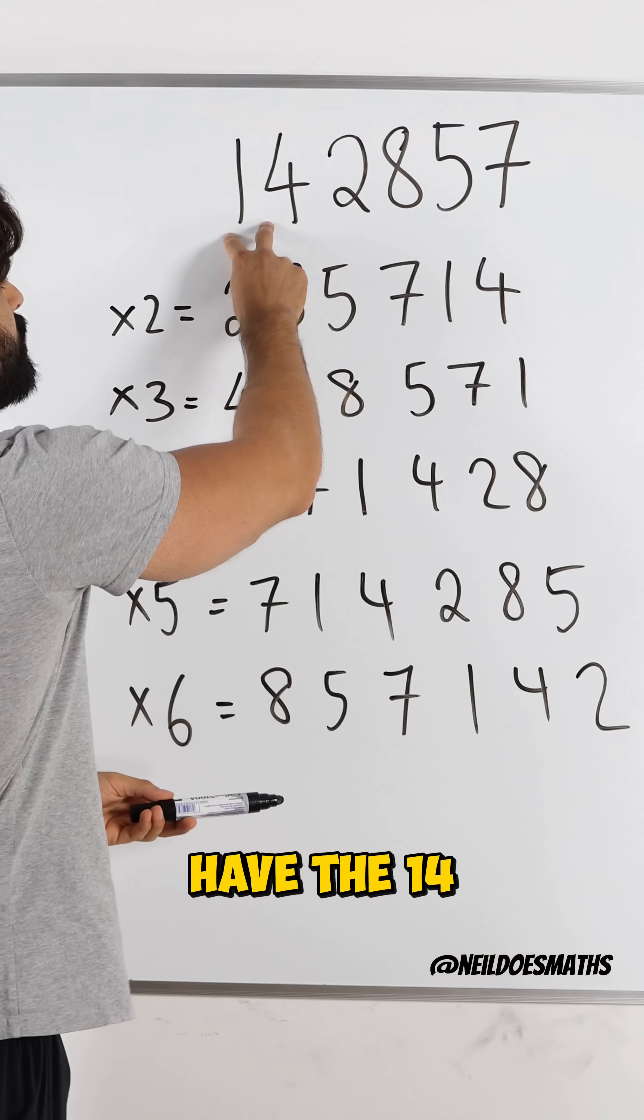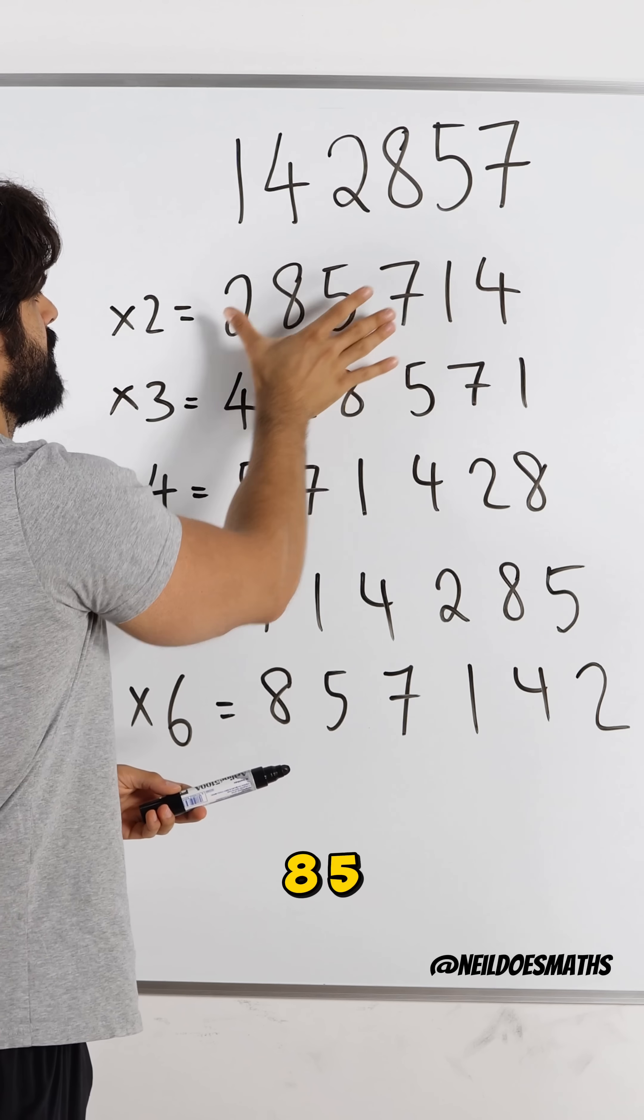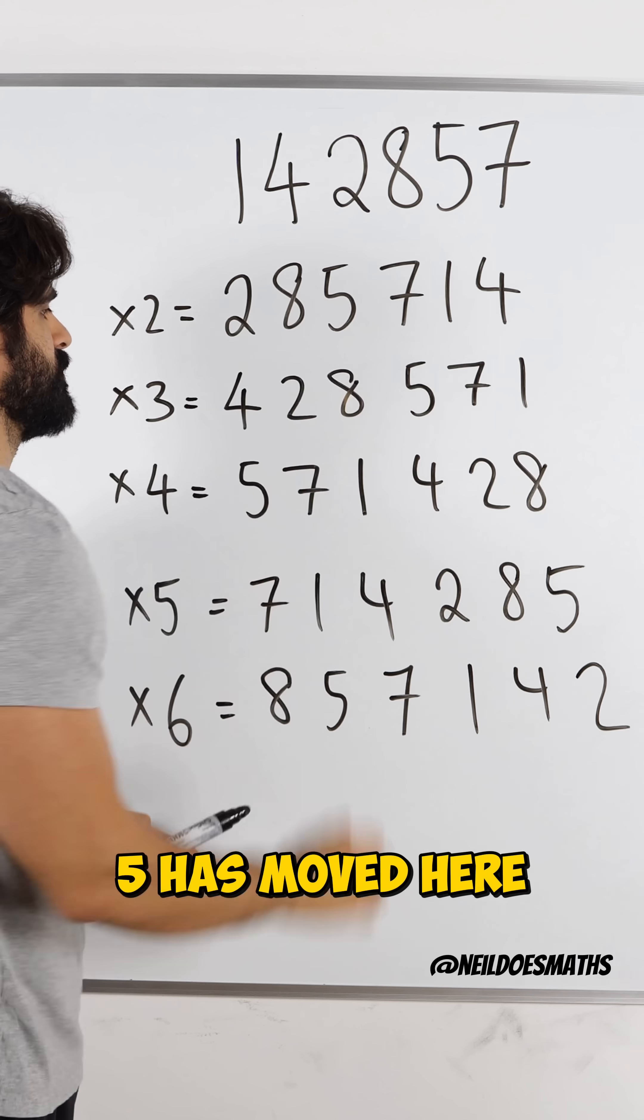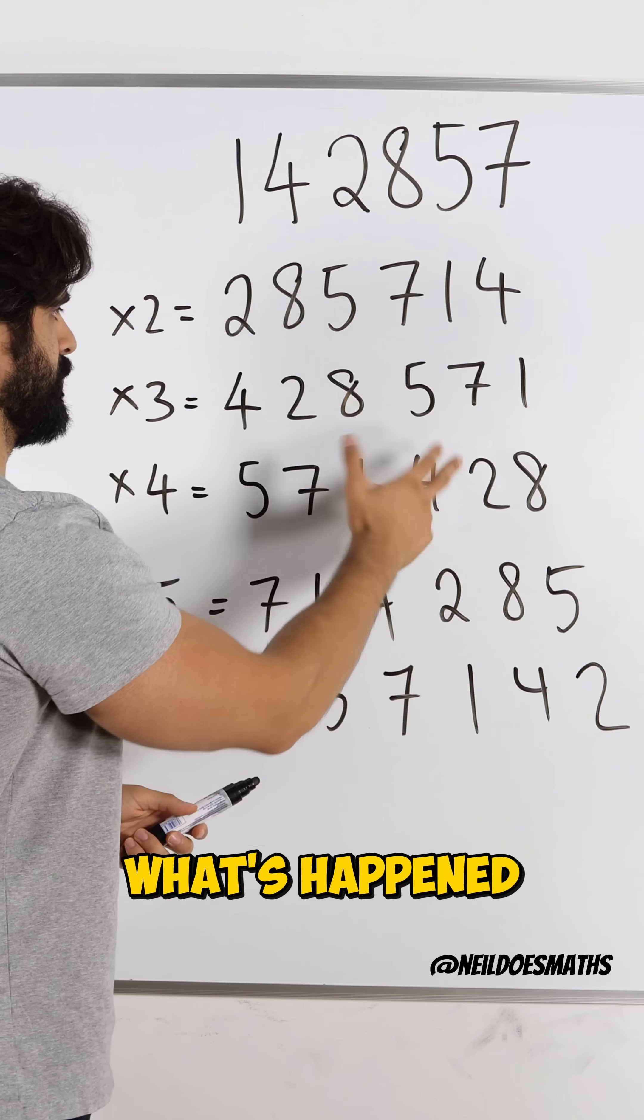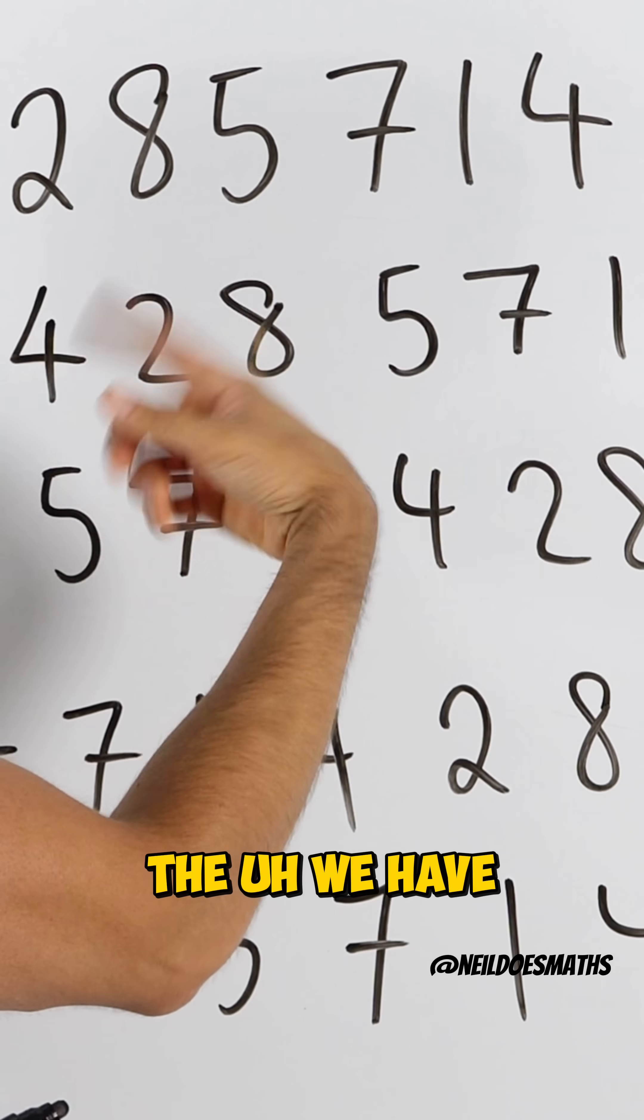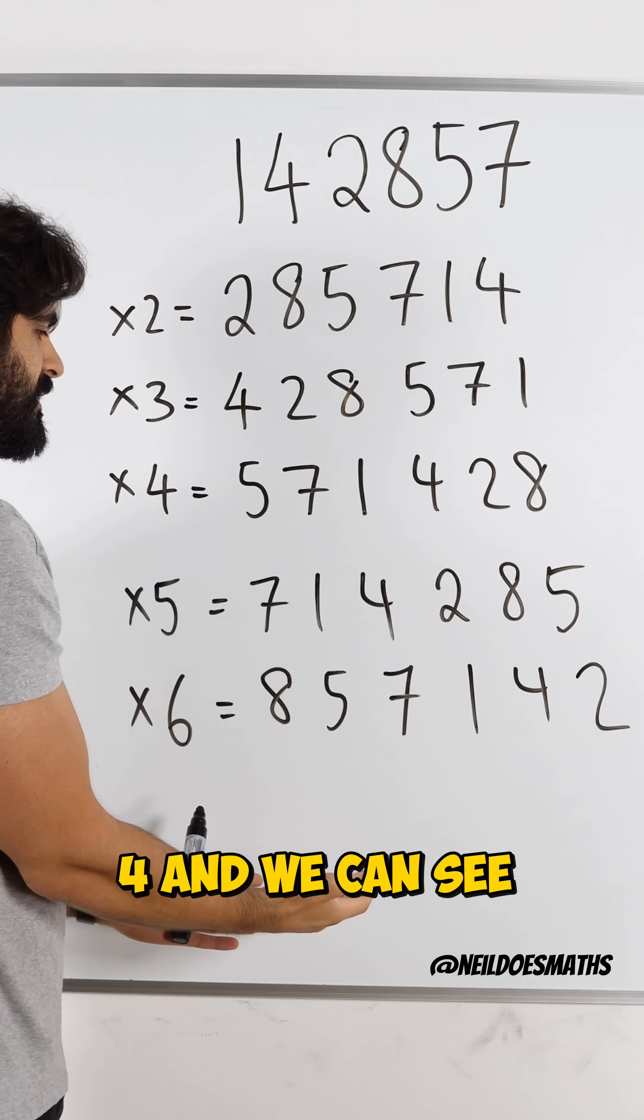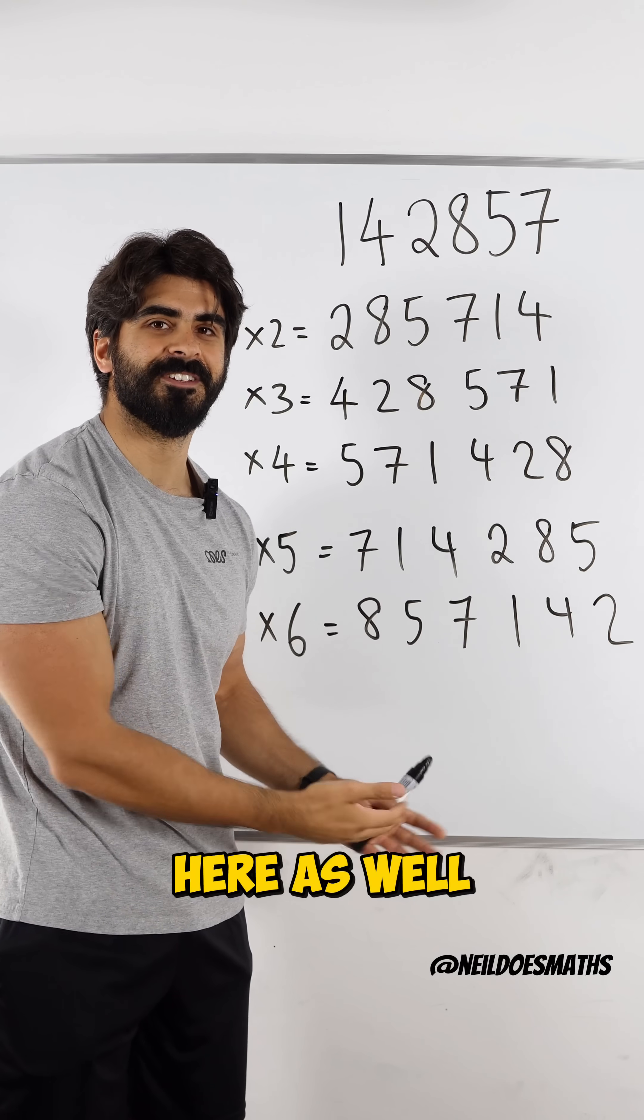So here we have the 14 and then the 2857 over here. Over here you have the 7 and 1, the 4 has moved here, the 285 has moved here. Here, what's happened? We have the 28 has moved here, the 571 and the 4. And we can see that happening here as well.